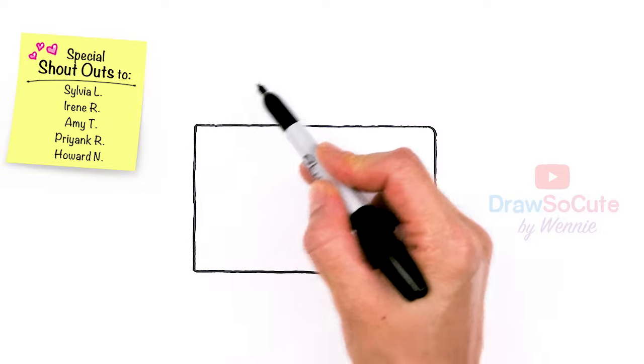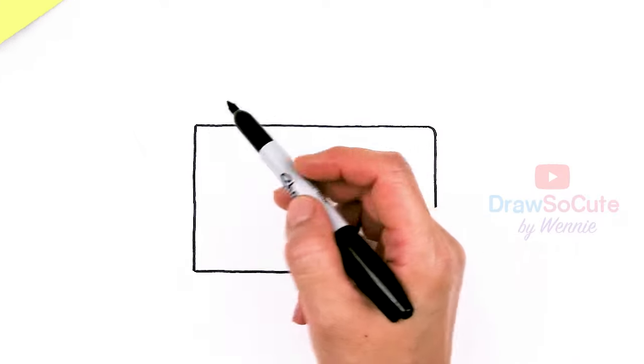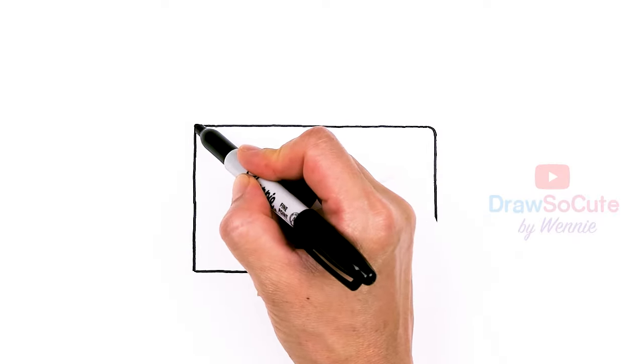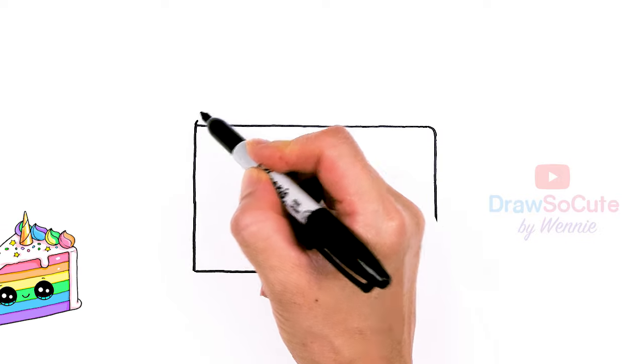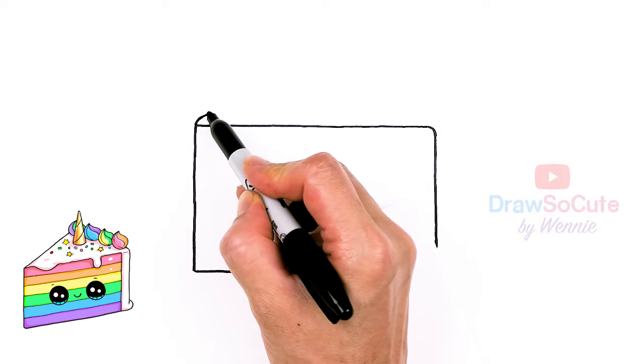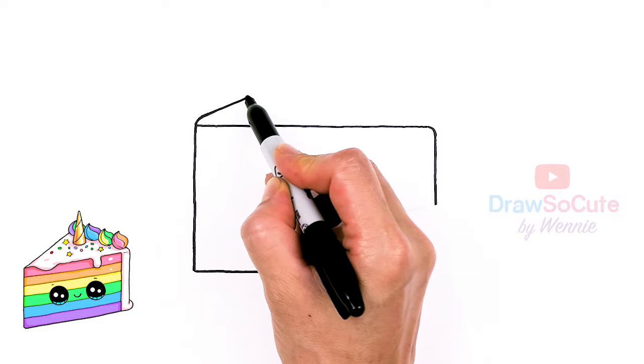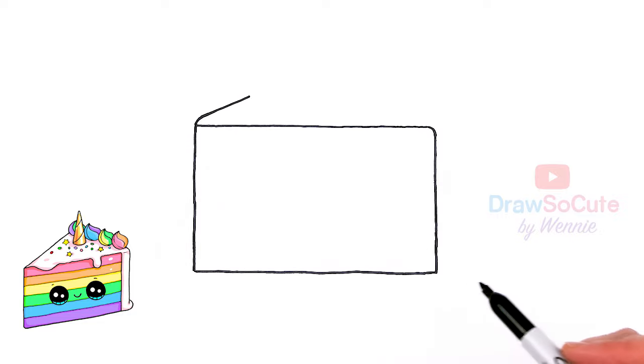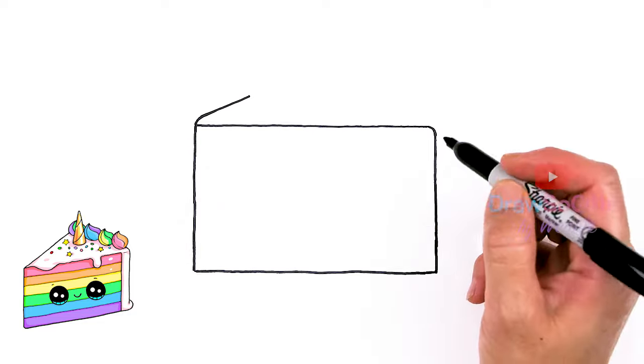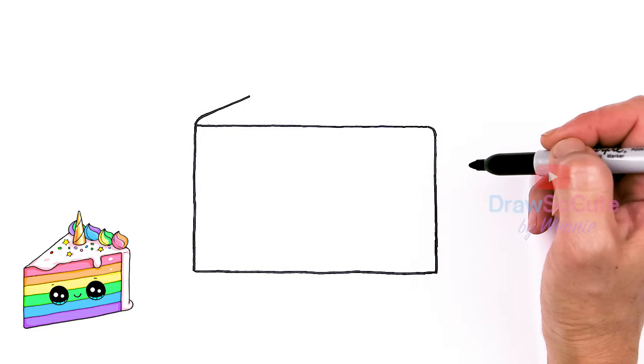Then from there, we're going to draw this kind of triangular shape on the top. So I'm going to come right here on this corner. And I'm just going to round it off a little bit and go out at an angle. So this is just a very simplified way of drawing a slice of cake without going into too much perspective.